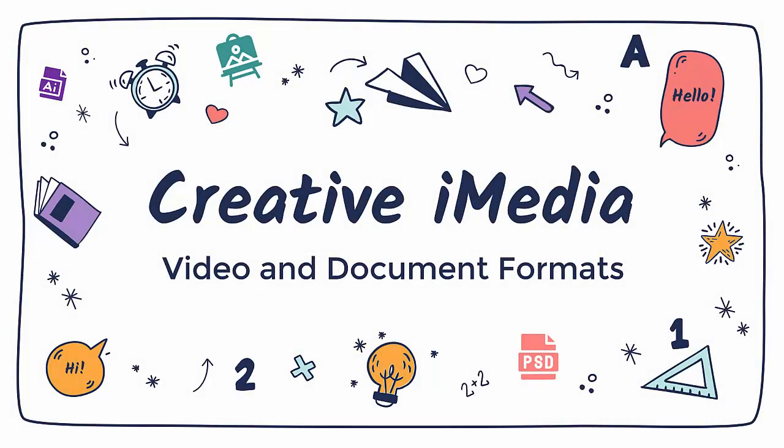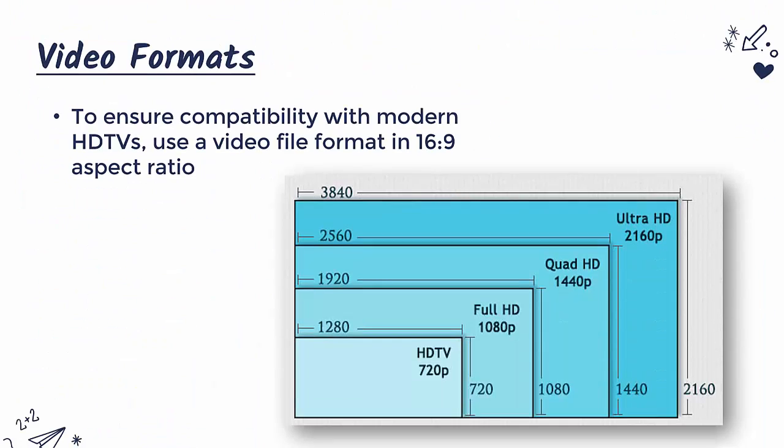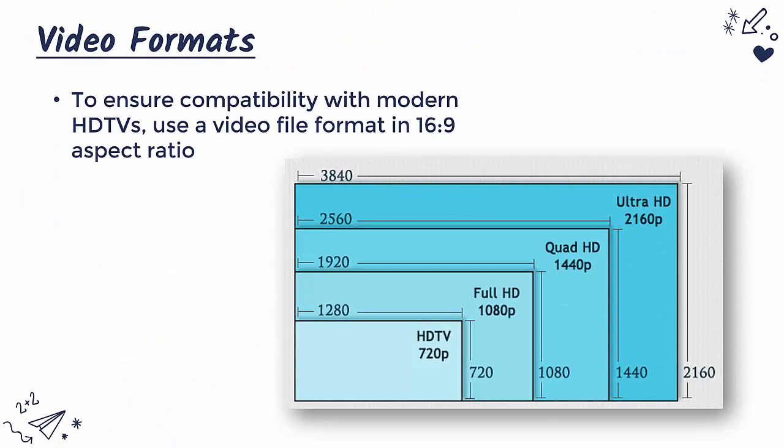We are now going to go through a few more popular file formats, this time for videos and just general documents as well. A video is really just a sequence of still images called frames, and we have different file formats for videos as opposed to just using the still image ones because we also have to store audio as well. Generally speaking, you're going to be producing videos which need to be designed for HDTVs. Modern TVs have a particular aspect ratio, which is about the resolution of each frame — how many pixels is the width, how many pixels is the height.